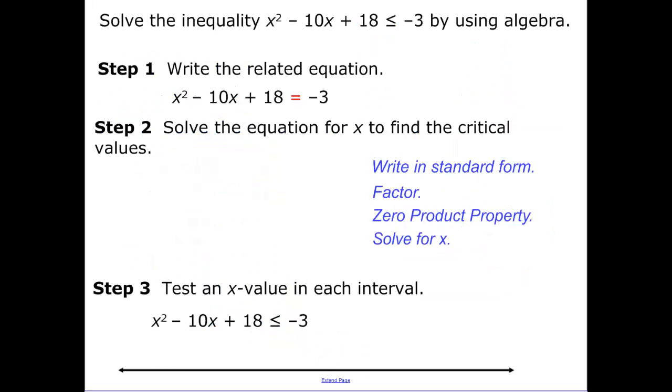The past two examples were solving by graphing. Another way you could do is solving by using algebra. So I have the steps kind of written out here for us. We write the related equation. Now basically I just change the inequality sign to an equal sign. I set it equal to zero. Now I factor... I set each one of my factors equal to zero. So we get 3 and 7.